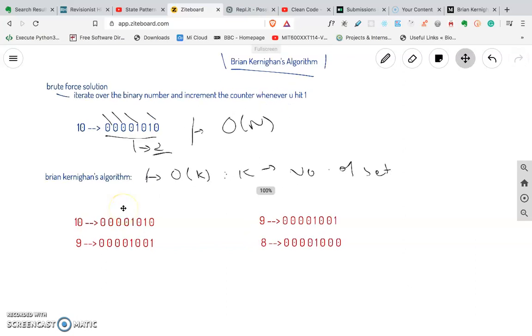So how does this algorithm work? There is a very simple observation that if you understand, then the whole algorithm is nothing much. Say you have a binary number 10 and a binary number nine. If you notice this, what's happening here...